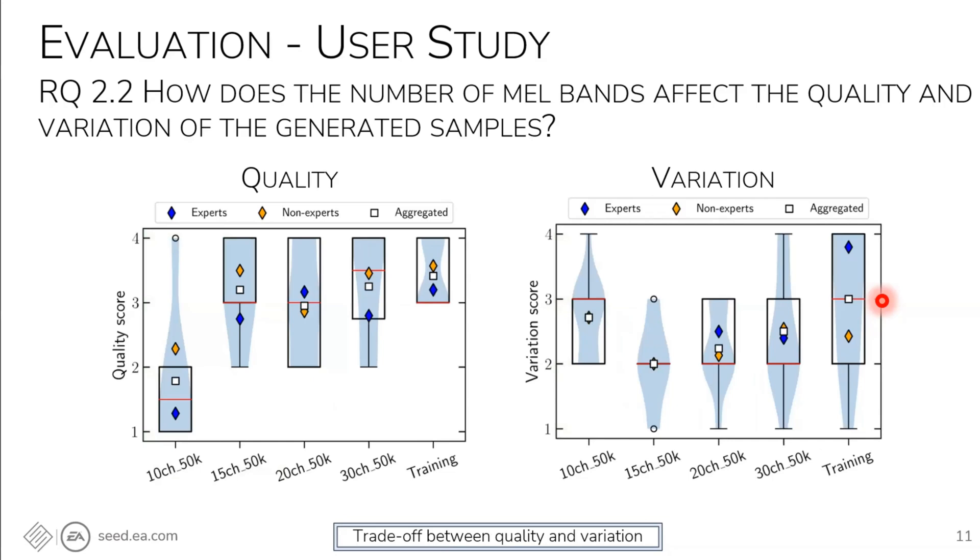And in terms of the mel bands, quality increases with the number of mel bands, with the worst model using 10 and the best model using 30 channels or mel bands. In terms of variation, the best model is the one that uses only 10 mel bands. And this is understandable, because the less information we give to the model, the more freedom it has to create variations. But also, it's harder to do so. That's probably what explains that it's the worst model in terms of quality. For the results I'm going to play later, I will use the second best model in terms of variation, which is the model that actually achieves the best quality. And interestingly enough, that quality on average is very close to that of the training set.